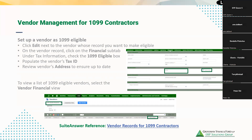Another thing to make sure as you're going through this process and updating your vendor master is that the vendor's address has been completed and filled out, along with a phone number and email address if applicable. This is important because when you use those customized safe searches, they will pull information off of the vendor record itself — including the vendor's address and their tax ID — for all vendors flagged as 1099 eligible.